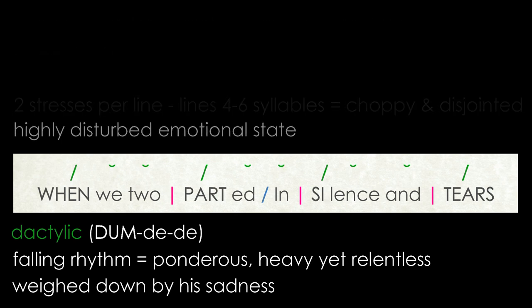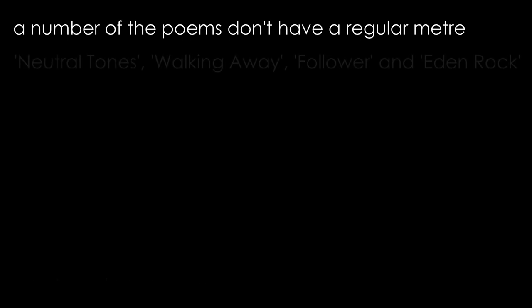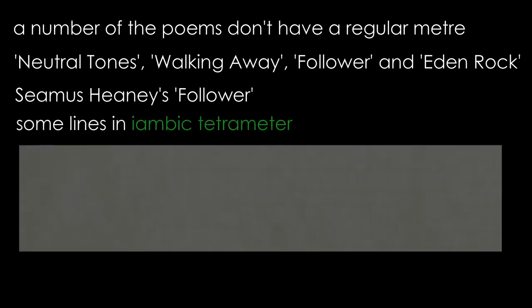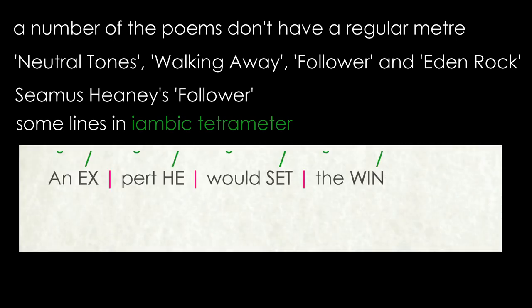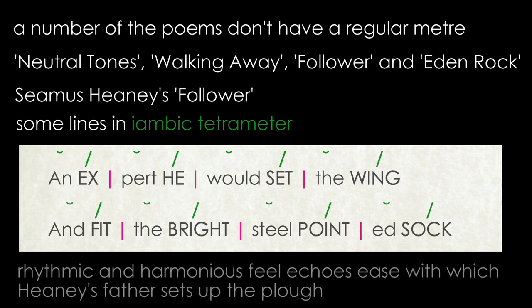A number of poems in the cluster — usually the more modern ones — even though they follow some kind of rhyme scheme, have no regular meter, such as Neutral Tones, Walking Away, Follower, and Eden Rock, although line lengths are roughly the same. Follower by Seamus Heaney is relatively heavy on iambs and does have some lines written completely in iambic tetrameter: 'An expert he would set the wing and fit the bright steel-pointed sock.' These lines have a very rhythmic and harmonious feel which helps to convey the ease with which Heaney's father sets up the plough.